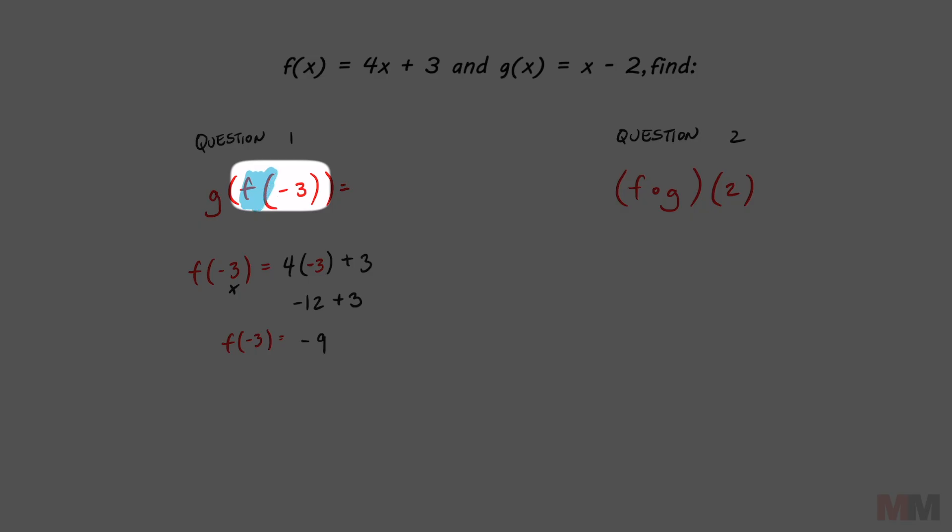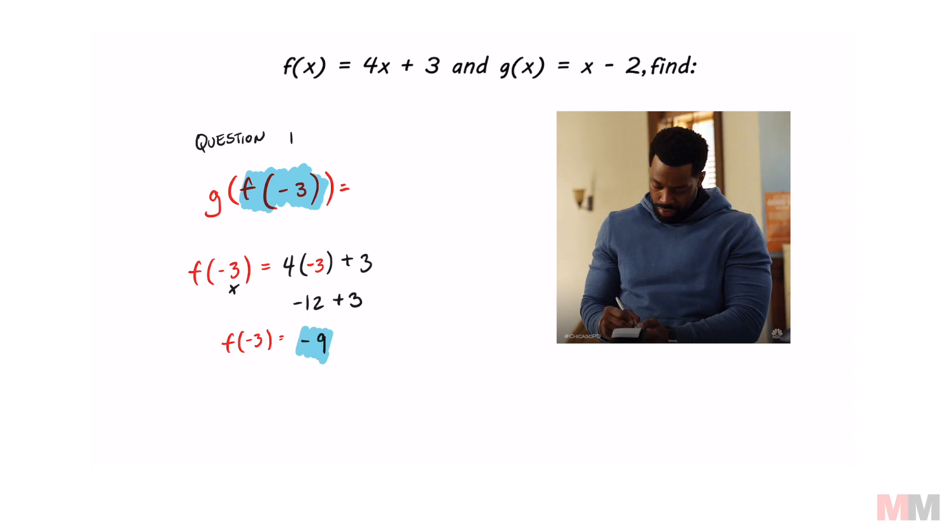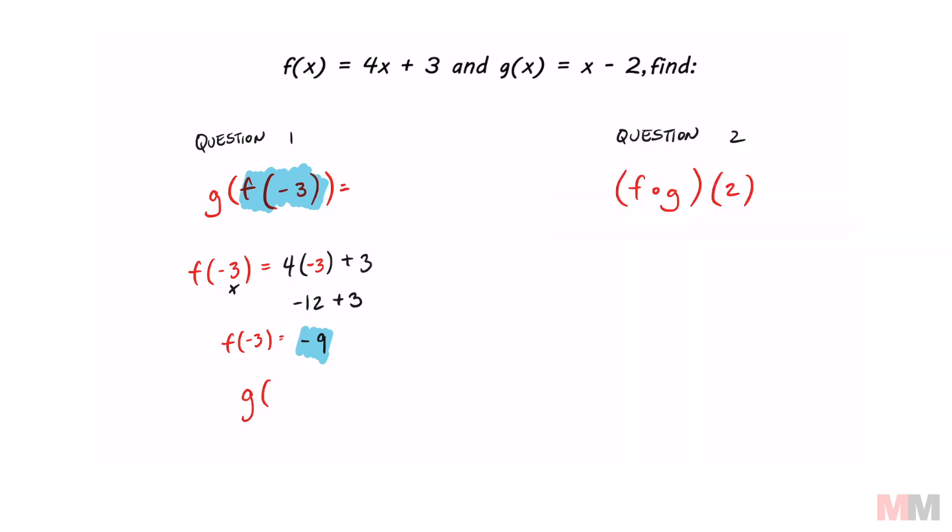Now I know what this function is going to equal, which is negative nine. So all I have to do is take this and replace this blue part with what it equals. Let's rewrite that. G, but instead of f of negative three, we know that that equals negative nine. That's what we just calculated. And now we just got to rerun that back,